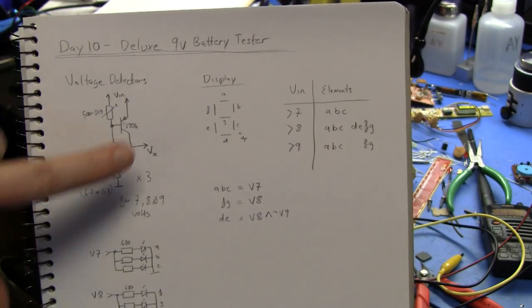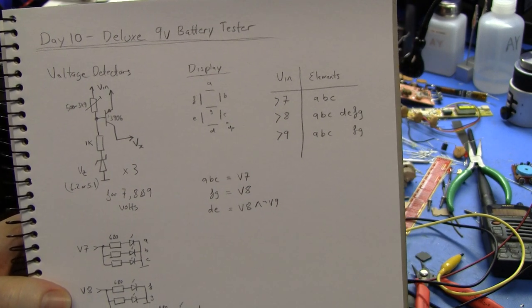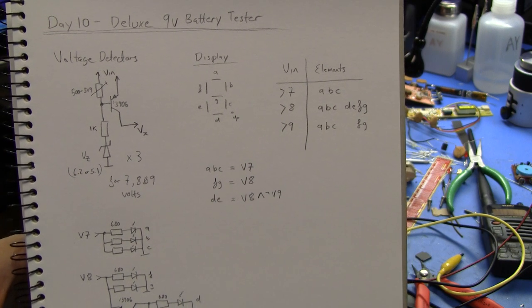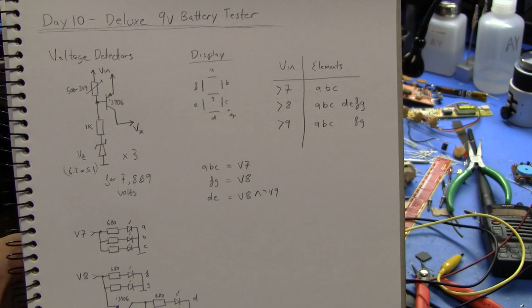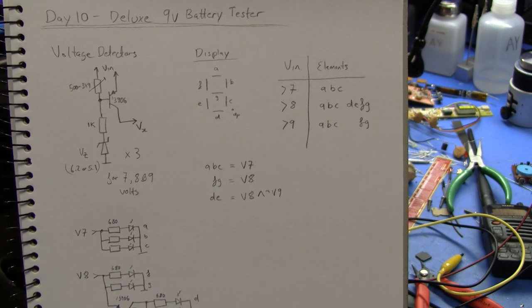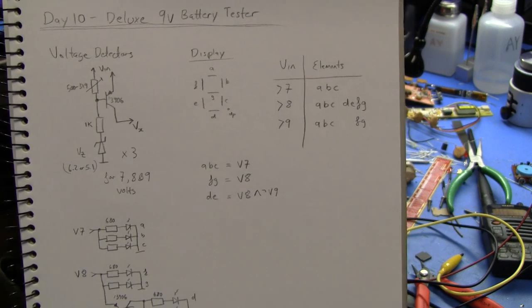So the decode logic is pretty simple. The A, B and C segment should be on for all voltages above 7. The F and G segment should be on for all voltages above 8, and the D and E segment should be on for all voltages above 8 but not on for voltages above 9. So that's pretty easy to do in some analog electronics.